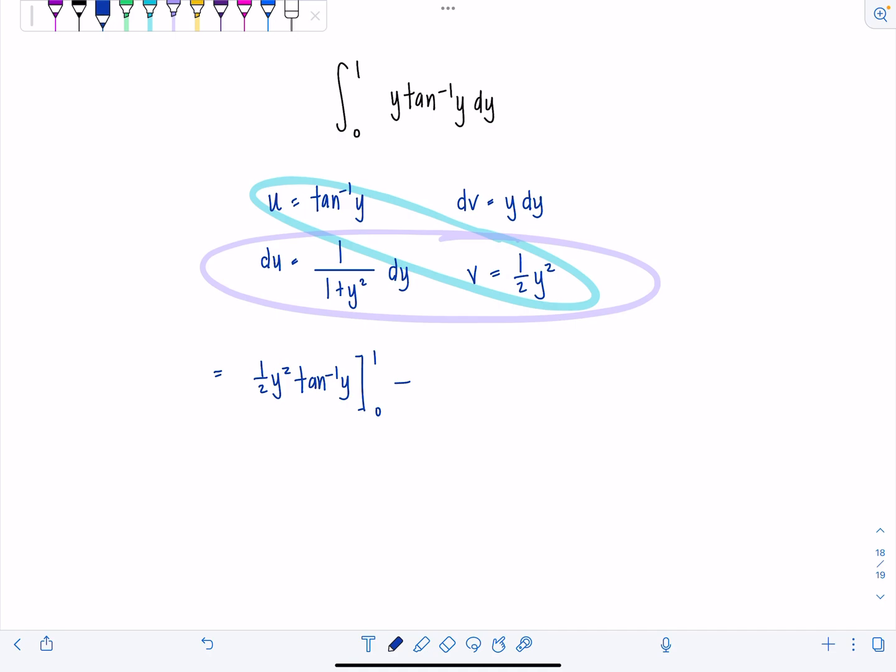So I'm going to pull that constant out, I like doing that, we have 1 half times the definite integral from 0 to 1, y squared over 1 plus y squared dy.